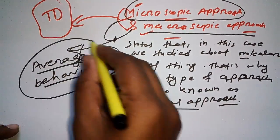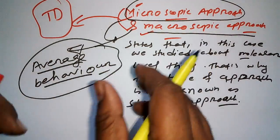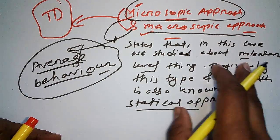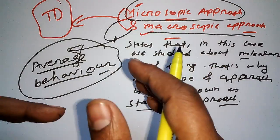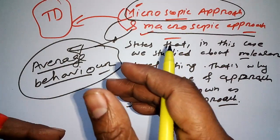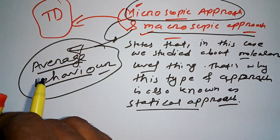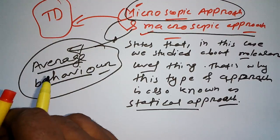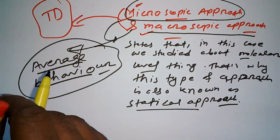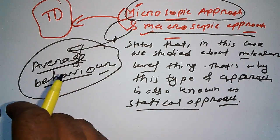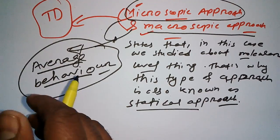In the macroscopic approach we study the average behavior of molecules, while in the microscopic approach we study very micro, molecular-level things. These are the two key differences between the microscopic approach and the macroscopic approach.